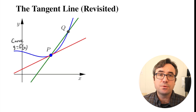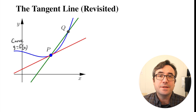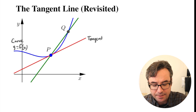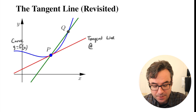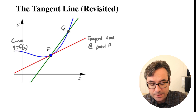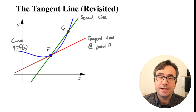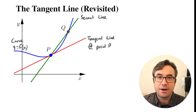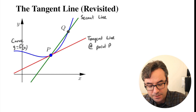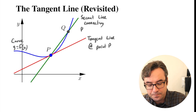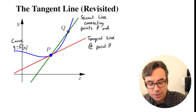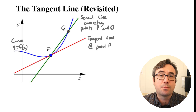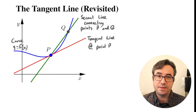The construction we're going to use involves another line — the secant line. So we have our tangent line at point P, but what we're going to do is look at this secant line, which intersects our curve at two points: point P and a second point Q. Once we have two points, it's straightforward to figure out the slope and equation of that line.